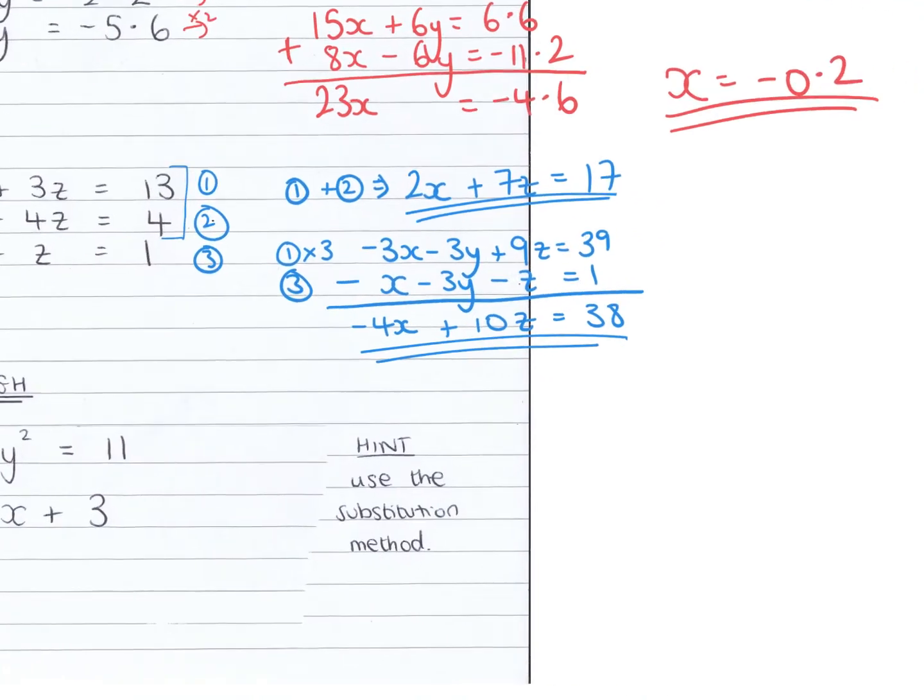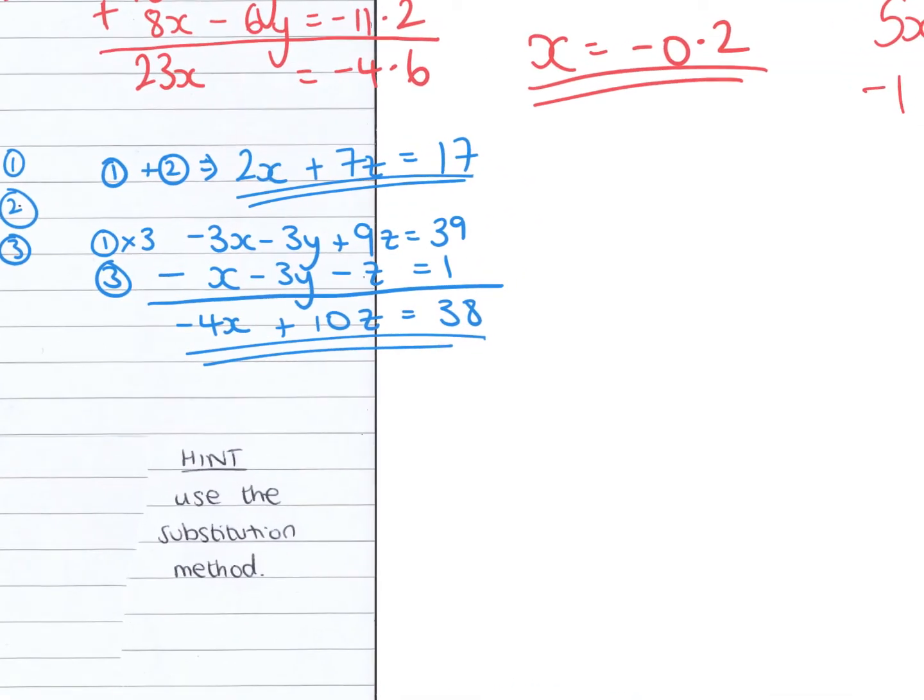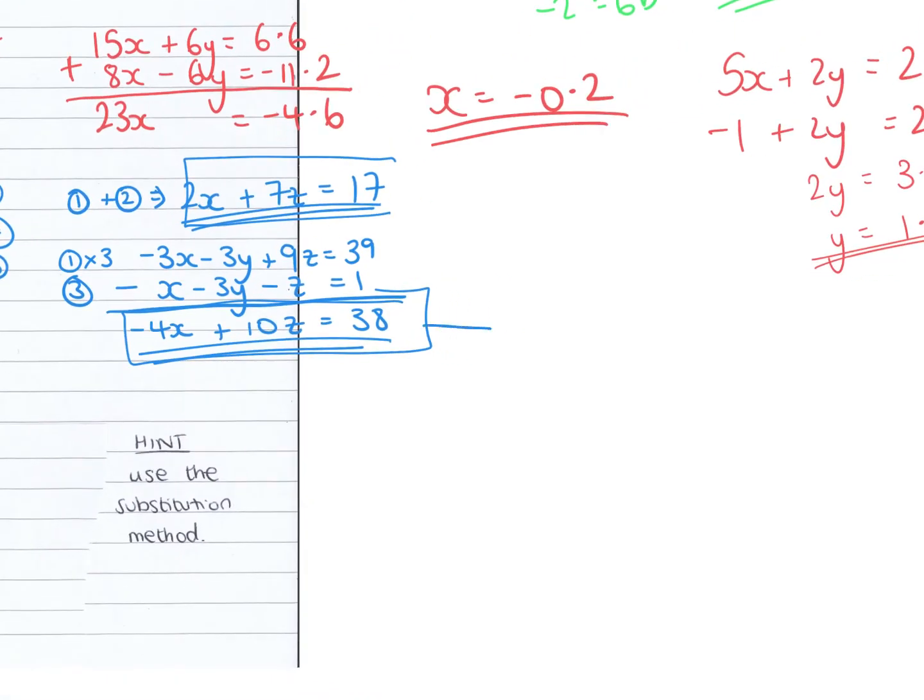And then I've got these two equations that I need to solve simultaneously. What I'm going to do is I'm going to half this equation. So half of that would be minus 2x plus 5z equals 19. And then I've also got this equation: 2x plus 7z equals 17. And if I add these together, minus 2x plus 2x is nothing. 5z plus 7z is 12z. 19 plus 17 is 36. Divide by 12, z equals 3.